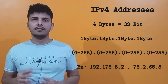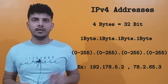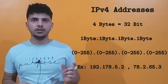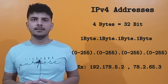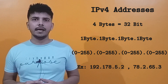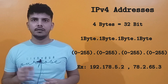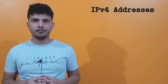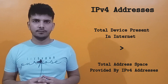IPv4 addresses are 4 bytes long where each byte is separated by a dot. The range of numbers that can be written in a byte is from 0 to 255. There are a total of 32 bits, and as such there are 2 to the power 32 unique IPv4 addresses possible, which is just over 4 billion addresses. This is also the problem with IPv4 — in our current world, the total number of devices is already much higher than the 4 billion mark.